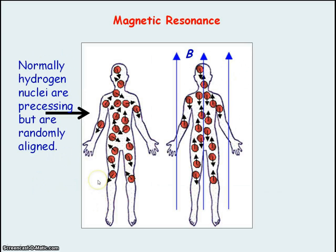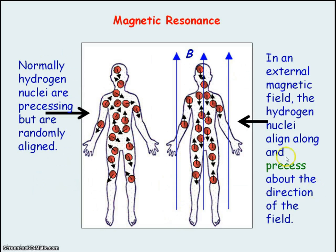Normally, hydrogen nuclei are precessing but they are all randomly aligned, so they're all precessing in different directions. However, if you apply an external magnetic field, then the hydrogen nuclei will align along the direction of the field and also precess about the direction of the magnetic field.